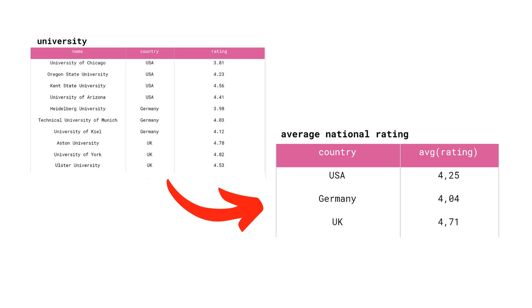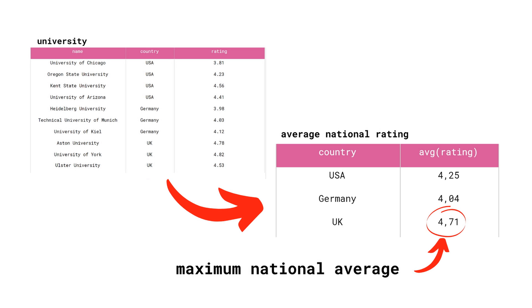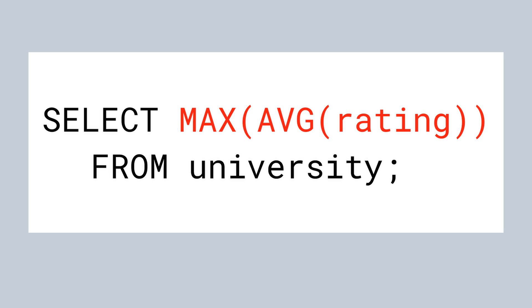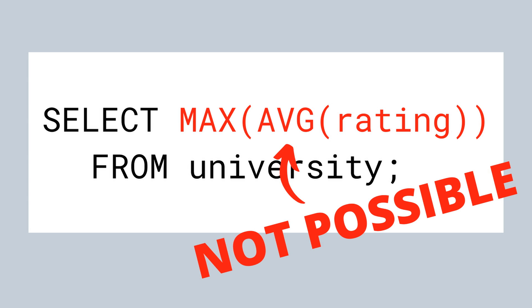The problem is as follows: we want to find the average rating for each country and then find the maximum average country rating. Please note that this is not the same as finding the maximum rating among all universities. Once again, we want to find first the average national ratings, and then find the maximum average national rating. This problem is impossible to solve in SQL without a subquery or an equivalent SQL structure, because we would have to use the AVG function and then use the MAX function on top of that — and MAX simply cannot have AVG inside its parentheses.